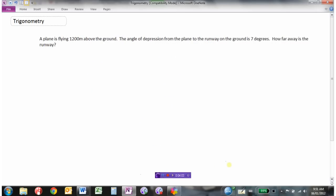Here we have a plane that's flying 1200 meters above the ground. The angle of depression from the plane to the runway is seven degrees. How far away then is the runway from the plane?